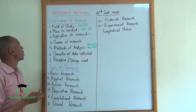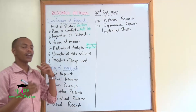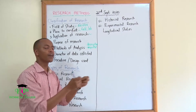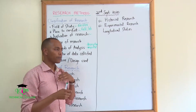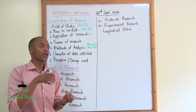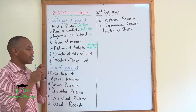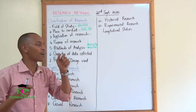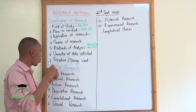Another thing that usually helps us to classify research is the character of the data collected. Will it be qualitative — that is, are you looking at the quality of specific things? Or are you looking at the quantity of the data? For example, are you counting the number of cars or are you counting the types of cars? Quality or quantity.